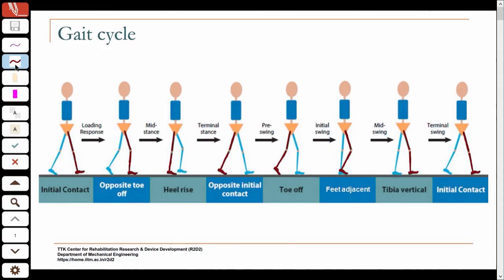Initial contact is an event, and that is an important event to indicate the start of gait. Loading response is the phase between initial contact and opposite toe off. Then from opposite toe off to heel rise, only one leg is in contact with the ground. Because once the opposite leg lifts off the ground you have only one leg. The brown leg is your stance leg, the single support leg, and that first attains mid stance.